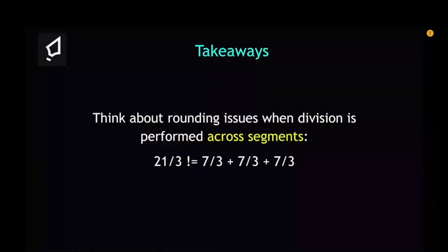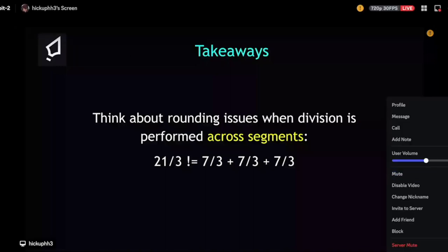The takeaway on rounding: when division is performed across segments, you can get these rounding issues. A classic example: 21 divided by 3 is exactly 7. But when you split 21 into three equal parts of 7 and then divide each by 3, rounding down gives 2+2+2=6 (not 7), and rounding up gives 9 (also not 7). So division split across segments can produce either too little or too much depending on rounding direction.